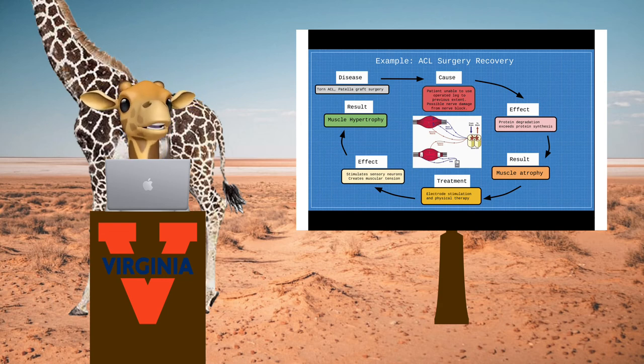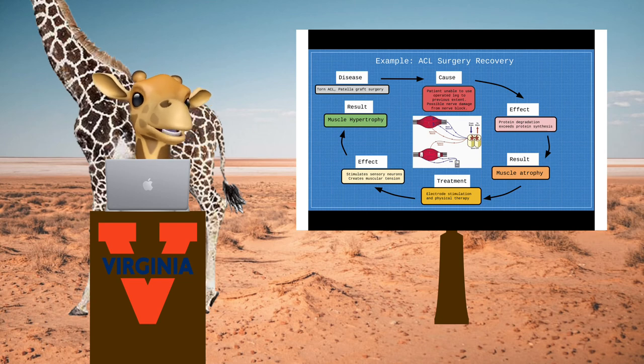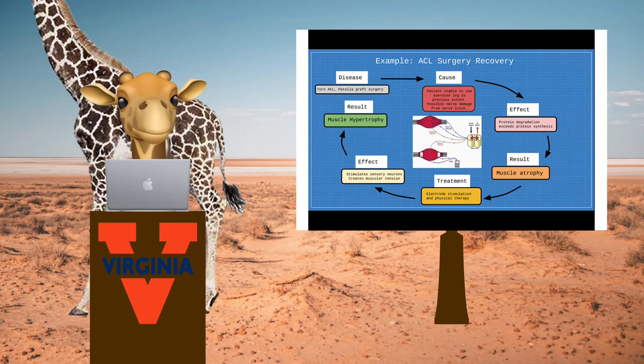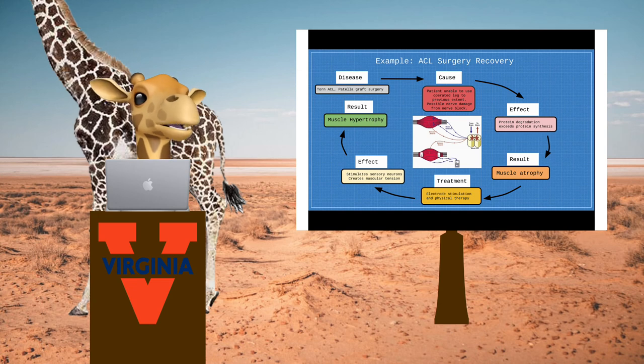The effect of the electrodes is stimulation of sensory neurons. As mentioned, nerve blocks can inhibit activity. The electrodes stimulate that activity by activating quadriceps sensory neurons to send signals to the brain. The brain responds by sending signals back to the quadriceps via motor neurons initiating a muscle contraction.